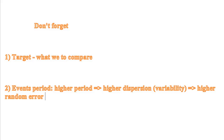I'd like to finish this video with a reminder. First, regarding the target: as I explained, we cannot compare Dow directly - we have to normalize it. Second, remember about event periods. For example, if we analyze angle separations involving the Moon - Moon-Sun, Moon-Venus - the periods for these events are about months. At the same time, events involving slow planets like Jupiter-Saturn or Jupiter-Uranus have periods of more than 10 years. We generally get higher correlation for events with bigger periods.